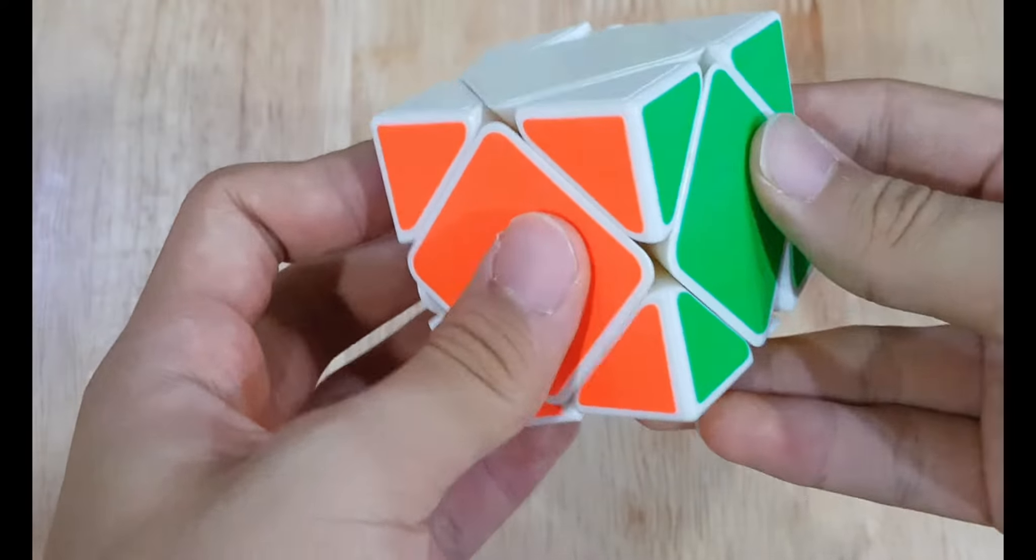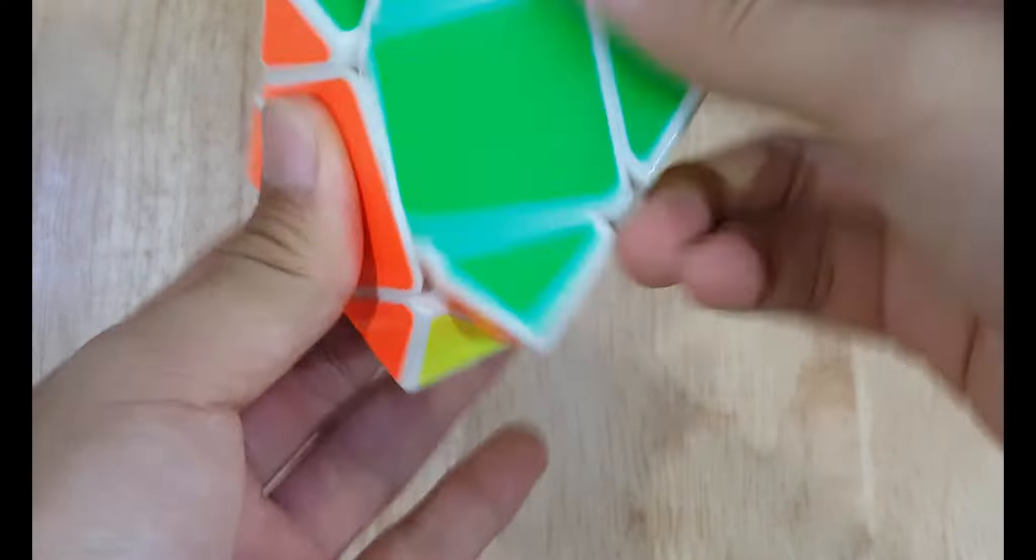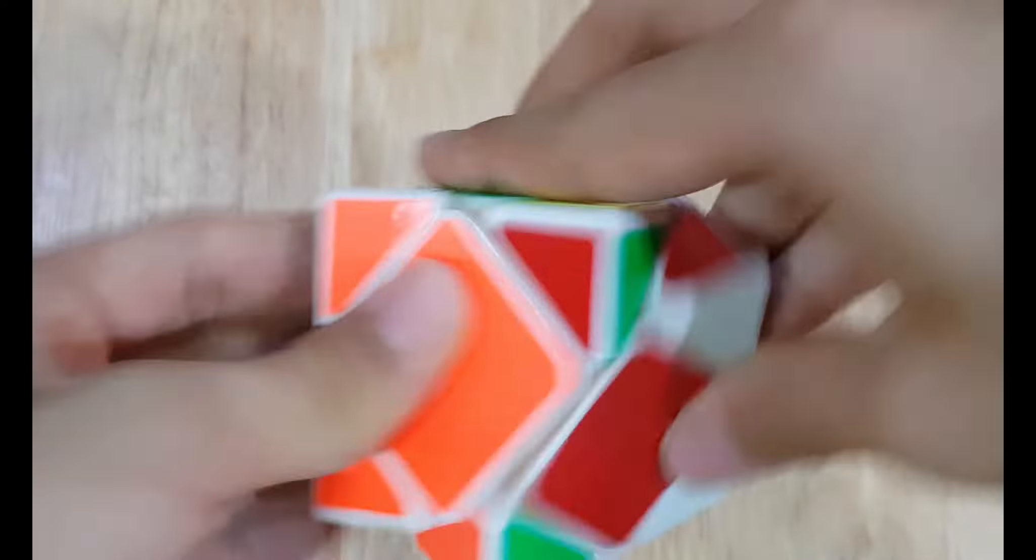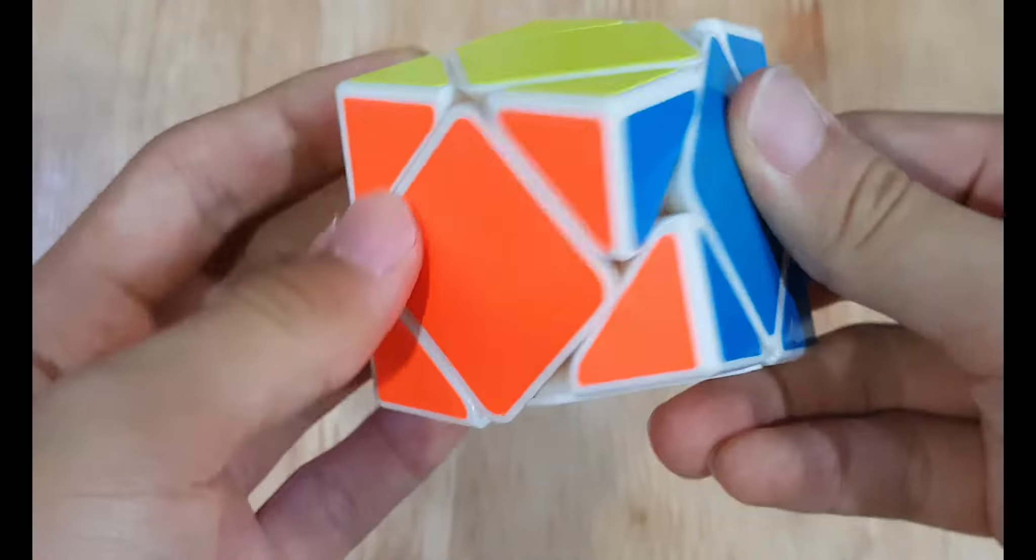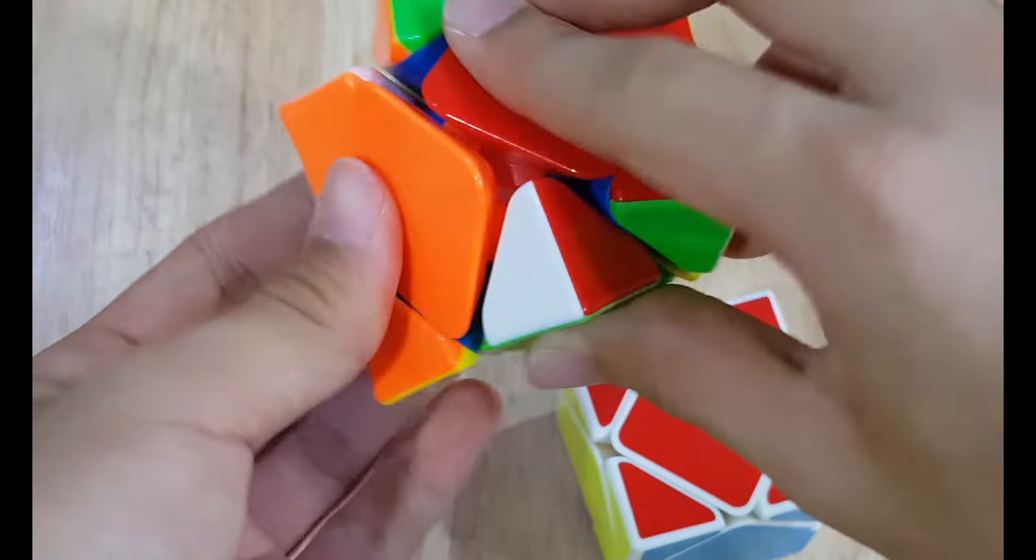For the MoFang Jiaoshi Skewb, it's very fast and crunchy. It locks up a ton and it's very fast for me, and I really like that. But it's a square shape, which this is like a concave feel, which I like more.